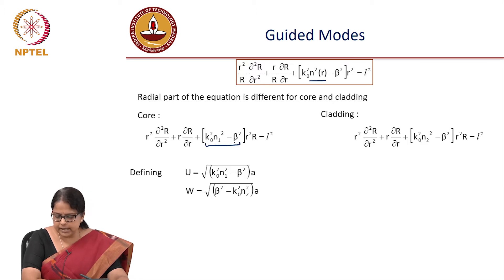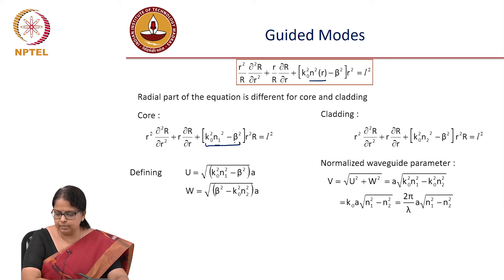What you can immediately see is that u square plus w square is going to give you a number v square, and now this v square is constant once you have picked your fiber and you have picked your wavelength. Once you have a wavelength of operation and you have your fiber that you are going to use, your v is constant. And depending on your v or depending on your n1 and n2, you will have u and w as variables.